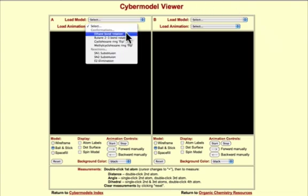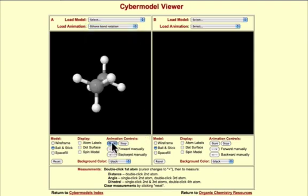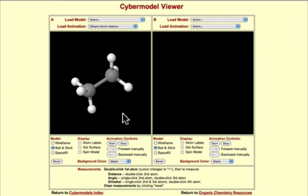Start that animation and what you'll see is the group in front appears to rotate relative to the group in back. Move that around and get a different view. You can see that effectively this is a motion that describes rotation about the carbon-carbon single bond.